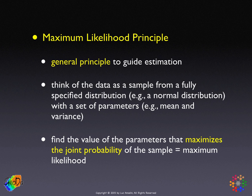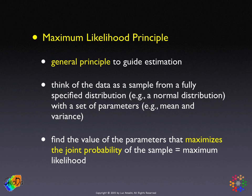Take the example of counts. We have a distribution specified as Poisson with one parameter — the mean of the distribution — and a given sample of counts. We can compute the joint probability. If we assume independence, that's the probability of the first observation times the probability of the second observation, and so on.